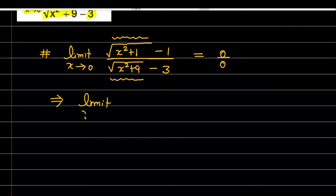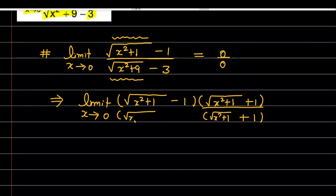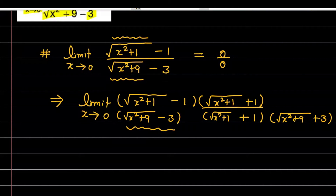सबसे पहले मैं इसको rationalize करने जा रहा हूँ — numerator वाले part को भी और denominator वाले part को भी। Numerator में है square root of (x² + 1) minus 1, इसको rationalize करने के लिए इसके conjugate से multiply करना पड़ेगा, यानी square root of (x² + 1) plus 1 से। Denominator में है square root of (x² + 9) minus 3, इस term को भी rationalize करूँगा, multiply करूँगा square root of (x² + 9) plus 3 से।